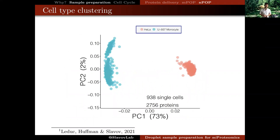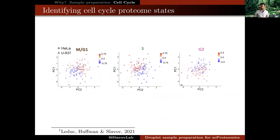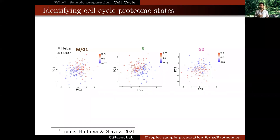As a validation of the method, we performed principal component analysis of a few hundred HeLa and U937 cells. The cells are separated based on cell type by the first principal component, which accounts for the vast majority of variance in our dataset. We are also able to perform principal component analysis using proteins that are periodic with the cell division cycle to identify the cell cycle phase of each cell, and we can perform this analysis jointly for HeLa and U937 cells.